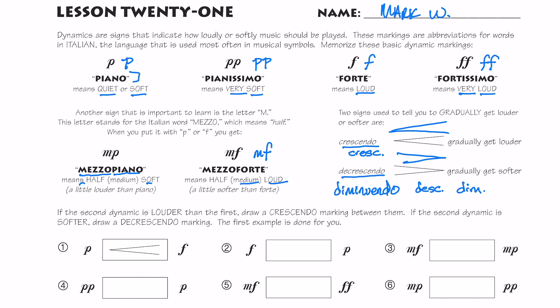So the first thing that you're going to do on this page is draw a dynamic. One dynamic is louder or softer than the first. If you see a louder dynamic at the beginning, you're going to draw a diminuendo or decrescendo to the second dynamic. If the first dynamic is softer than the second, then you're going to draw a crescendo. This should be very simple. So number two here, forte to piano, obviously I'm going from loud to soft. So I draw a diminuendo or decrescendo.